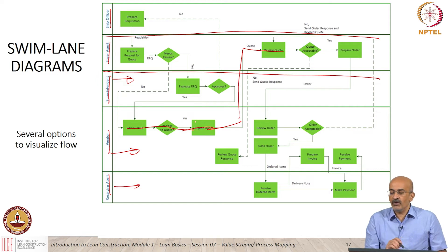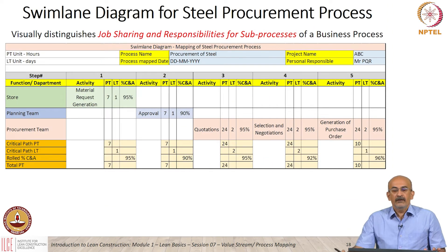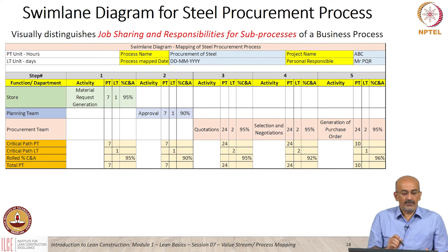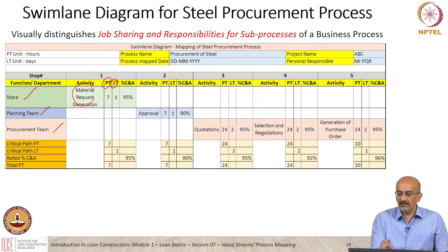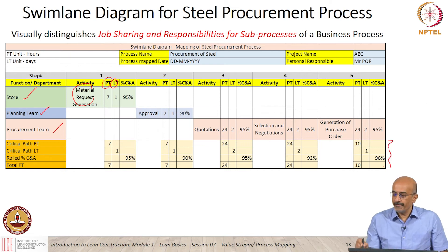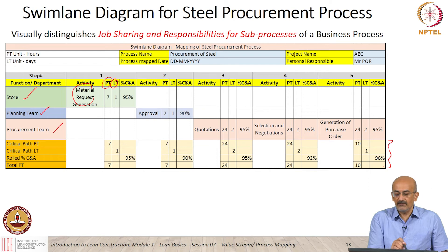This is also a very popular tool used for visualization and brainstorming. Here is an example of a swim lane diagram for the steel procurement process discussed earlier. We had the stores team, the planning team, and the procurement team as the lanes. All metrics — processing time, lead time, and activities — are represented in each lane. Using this, further metrics can be calculated. Swim lanes can be used with numerical notation so that we can quantify the process in more detail.